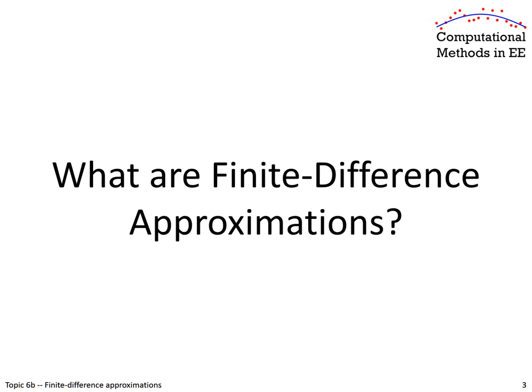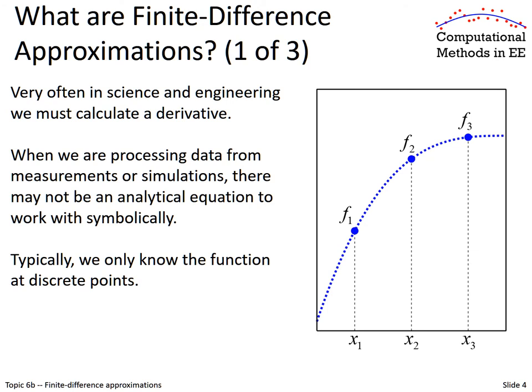First topic: what are finite differences? When we are talking about the finite difference method, that really does imply that we do not have a continuous smooth function stored in memory. We really only know the function at discrete points — in this case at points 1, 2, and 3. We do not store the function between those points; in fact, we do not know what the function is between those points. We can do some interpolation to make good guesses, but the point is we do not know what the function is at the in-between points.